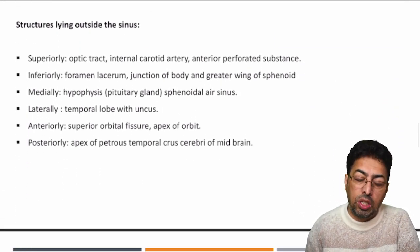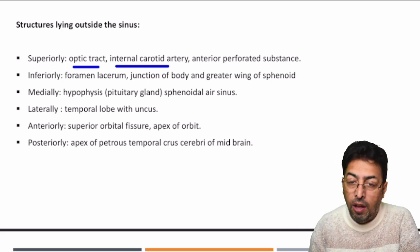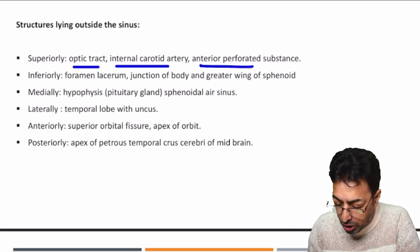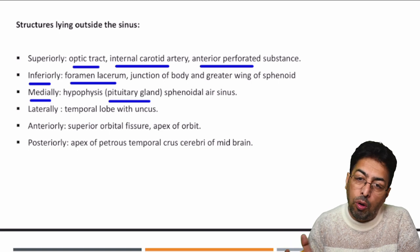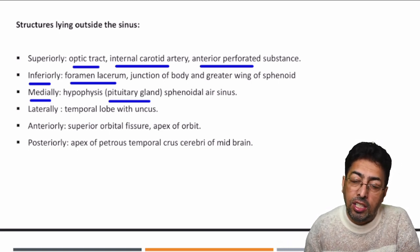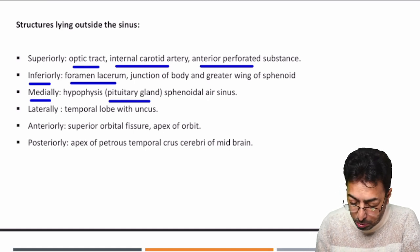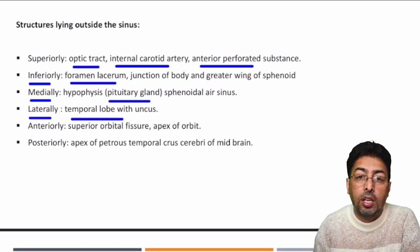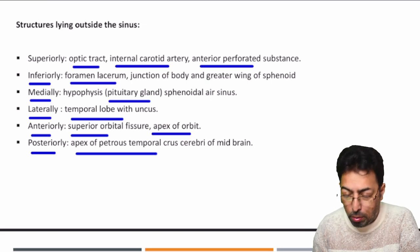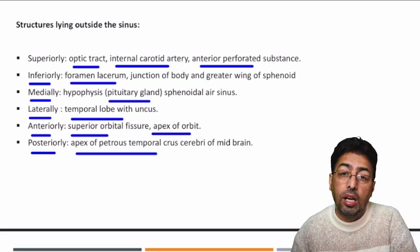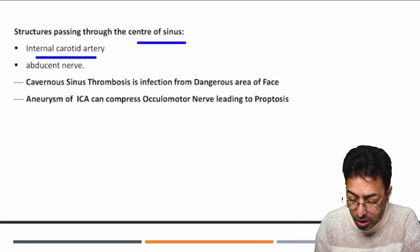Regarding the structures outside the sinus: superiorly lies the optic tract; the internal carotid artery is a content; inferiorly is the foramen lacerum; medially is the pituitary gland — with the paired cavernous sinuses lying on both sides of it. Laterally is the temporal lobe of the cerebrum with the uncus; anteriorly is the superior orbital fissure and apex of the orbit; posteriorly is the apex of the petrous temporal bone.